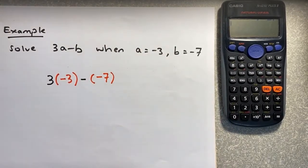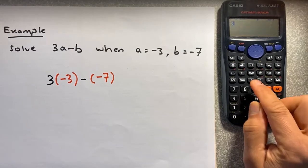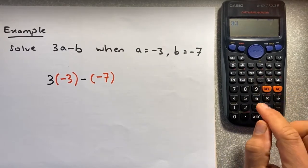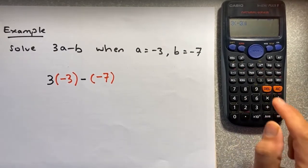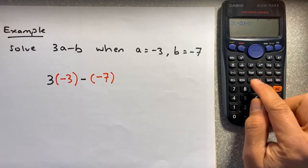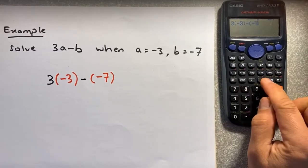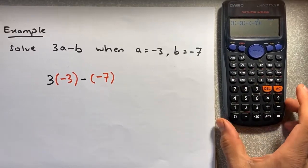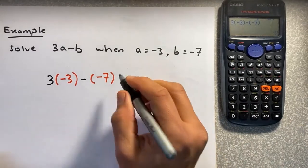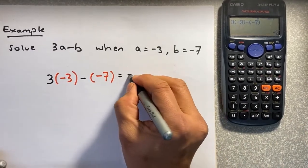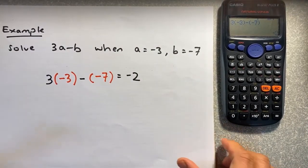So what's the next step? Put it in your calculator. You're going to put 3, bracket, minus 3, close bracket, minus bracket, minus 7, close bracket, and press equal. The answer is negative 2. Simple, isn't it? Good.